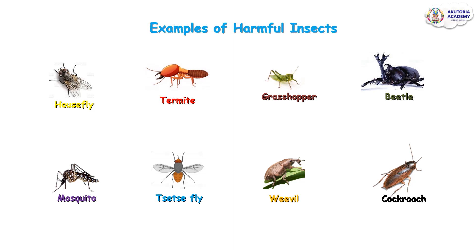Examples of harmful farm insects include the housefly, the termite, grasshopper, bedbug, mosquito, tsetse fly, weevil, and cockroach.